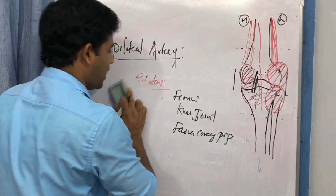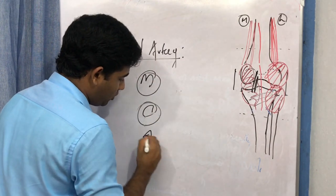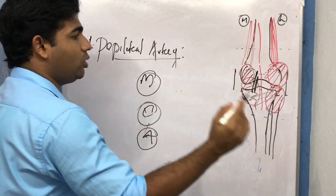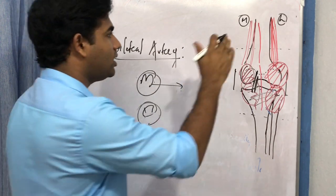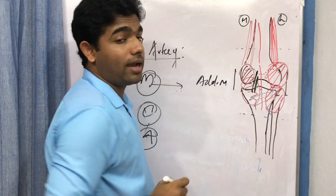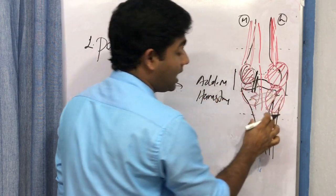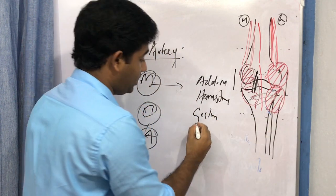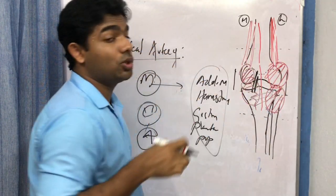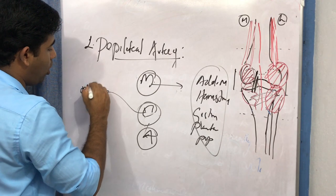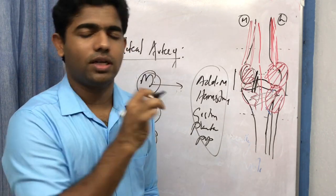The branches of the popliteal artery: remember the mnemonic MCA — muscular branch, cutaneous branch, and articular branch. The muscular branches supply the adductor magnus, hamstrings (semitendinosus, semimembranosus, biceps femoris), medial and lateral heads of gastrocnemius, plantaris, and popliteus. There is also one small cutaneous branch arising directly from the popliteal artery.